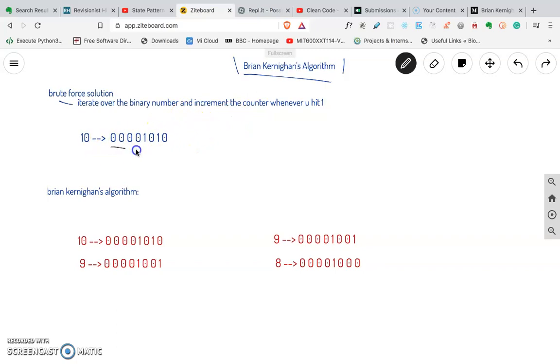That will be just iterating over the binary number and incrementing the counter whenever you hit a one. So you have this binary number, you increment over this, and whenever you hit one you increment the counter. This will give you result two. The time complexity here is big O of n, where n is the length of the binary number, because you have to iterate over the full binary number to get the number of set bits.